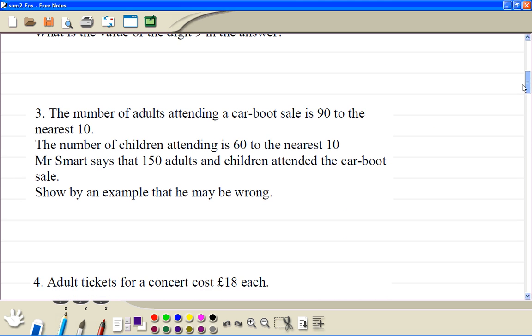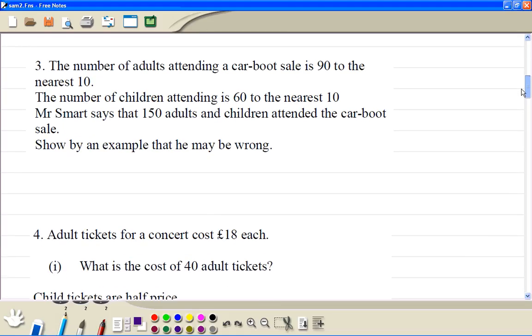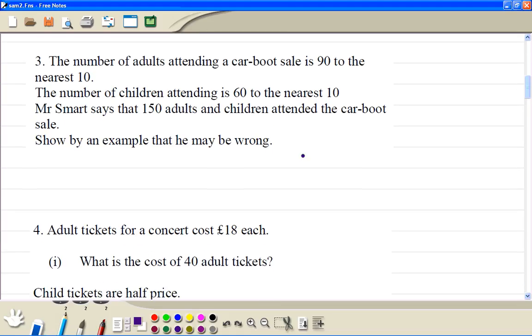Number 3. To explain: because 90 to the nearest 10 means it's from 85 to 94. 60 to the nearest 10 means it's from 55 up to 64. So it's possible we use the lower end, so that's 85 and 55. This just gives you 140.